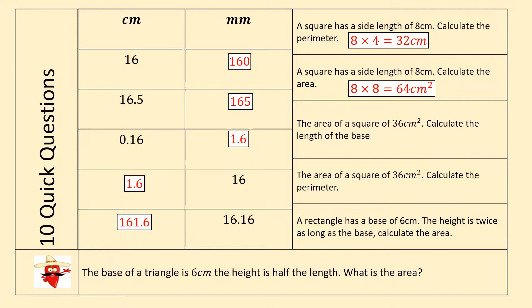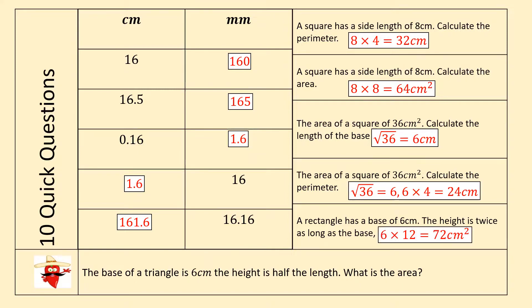If we know the area is 36 centimeters squared, we need to use the square root, which is six. That's the length of the base. To calculate the perimeter, well, we know the side length is six centimeters. We need to multiply that by four to get 24 centimeters for that particular square. If a rectangle has a base of six, the height is twice as long as the base. Calculate the area. So the height must be 12. Six multiplied by 12 to give us 72 square centimeters. The base of a triangle is six centimeters and the height is half the length. What is the area? So remember with a triangle, we multiply the two dimensions, but then we halve the total. So six multiplied by three gives us 18, but we need to divide that by two to give us nine square centimeters as that particular area.